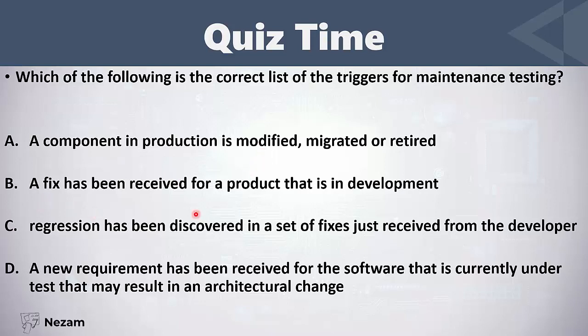'A fix has been received from a product that is in development' — this is wrong because the product is still in development; we are still developing the software, so there is nothing called maintenance testing here. 'Regression has been discovered in a set of fixes just received from the developer' — here we are performing testing and fixes are received from the developer, but there is no maintenance testing; we are still developing and testing the product.